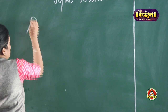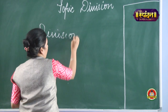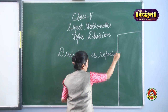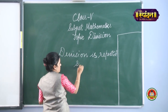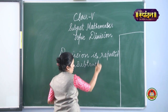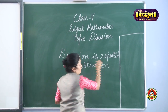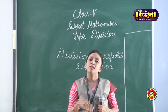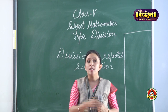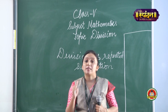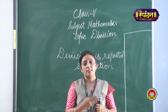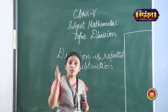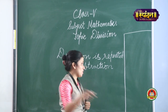Division is called repeated subtraction. Just as multiplication is repeated addition, similarly division is repeated subtraction. Let me take a small number so you will understand how it is repeated subtraction.